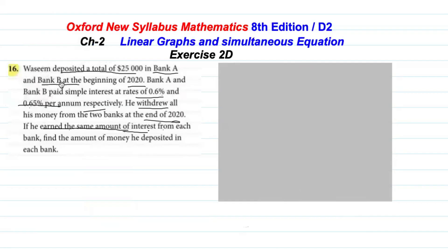Question number 16: Waseem deposited $25,000 in Bank A and Bank B at the beginning of 2020. Bank A paid interest of 0.6% and Bank B paid 0.65% per annum respectively. He withdrew all his money from both banks at the end of 2020 and earned the same amount of interest from each bank. Find the total amounts deposited in each bank.